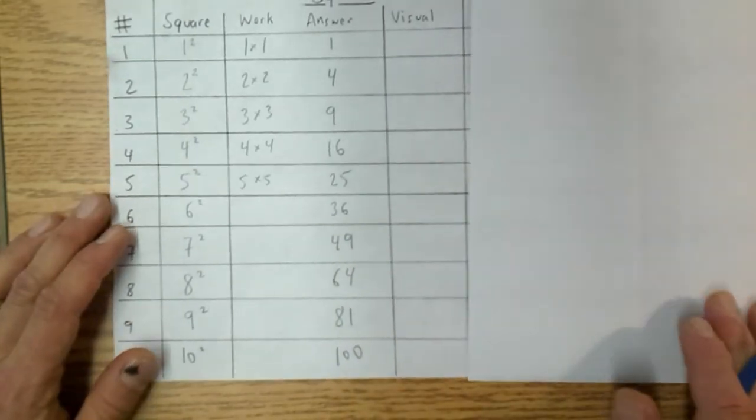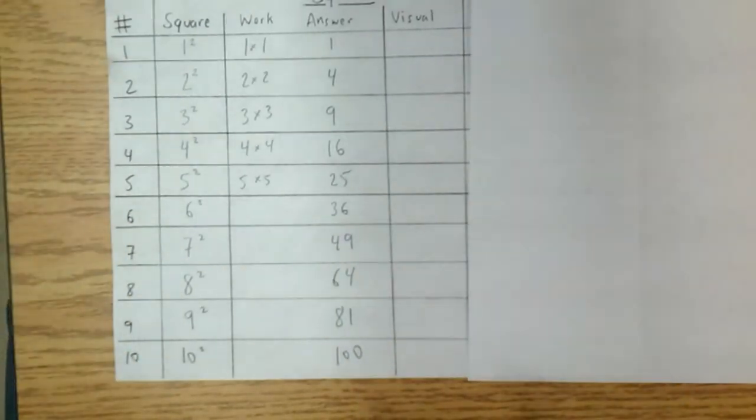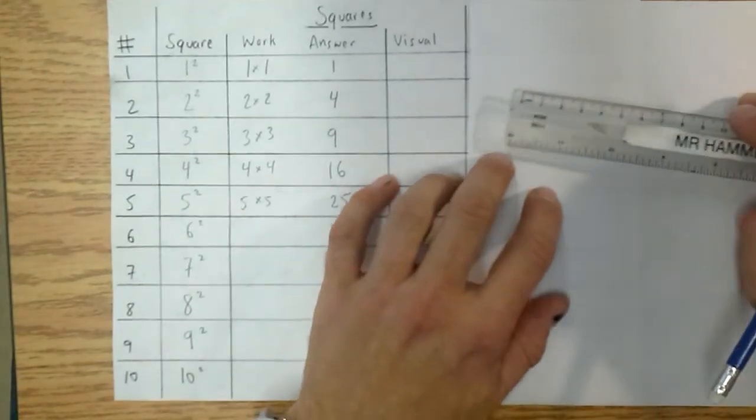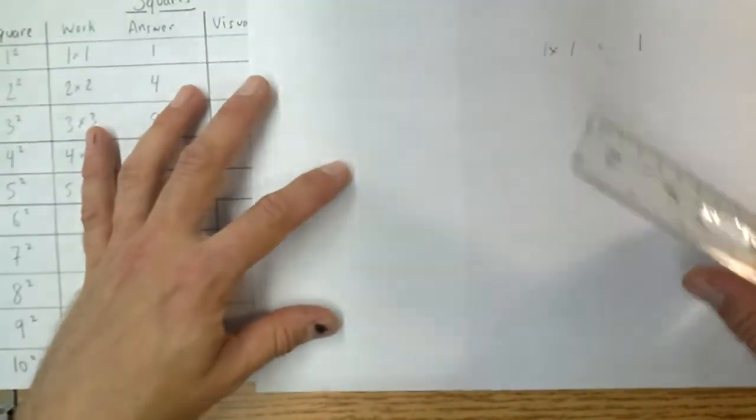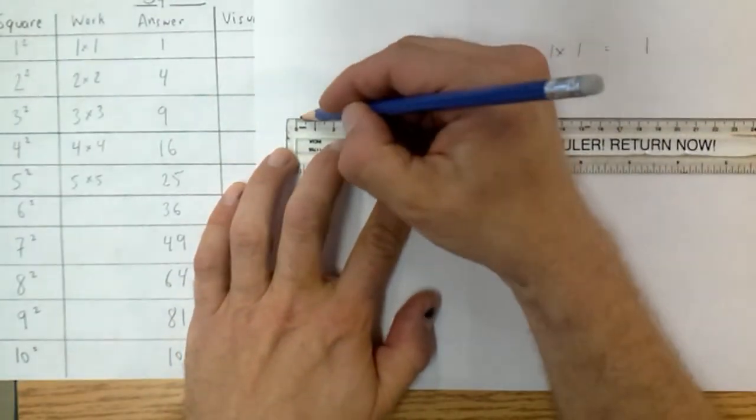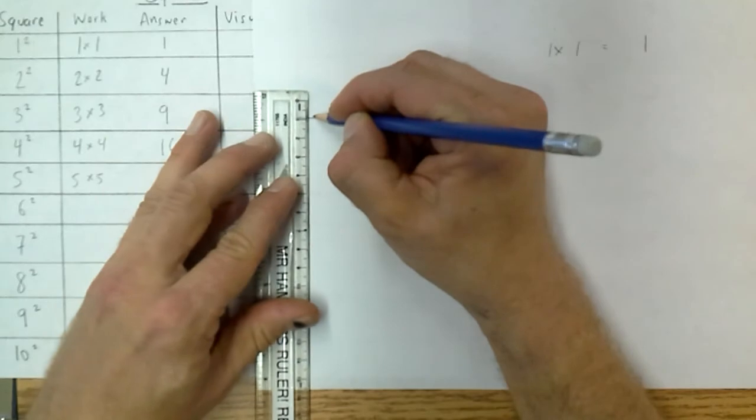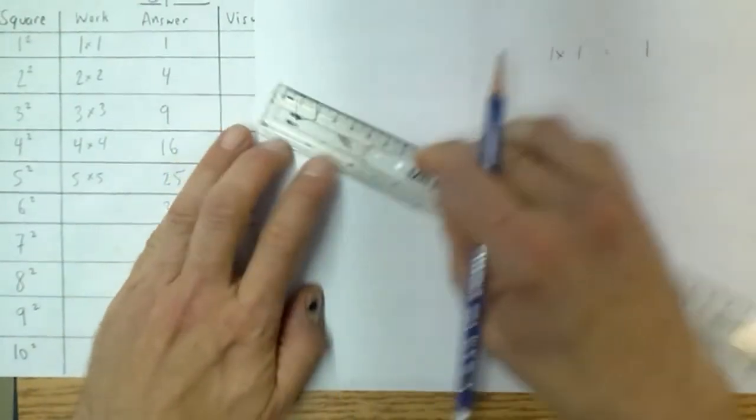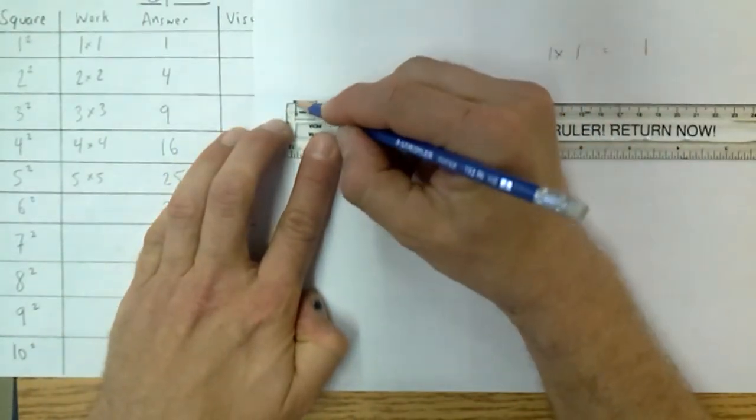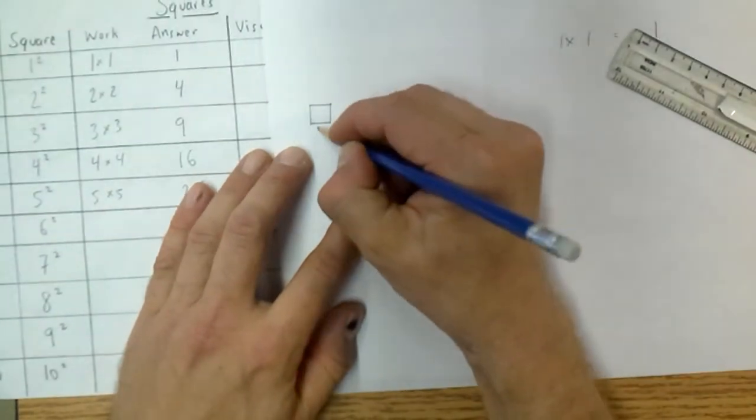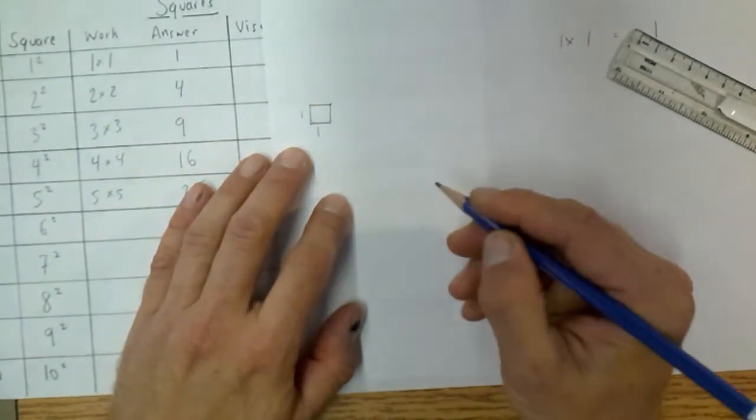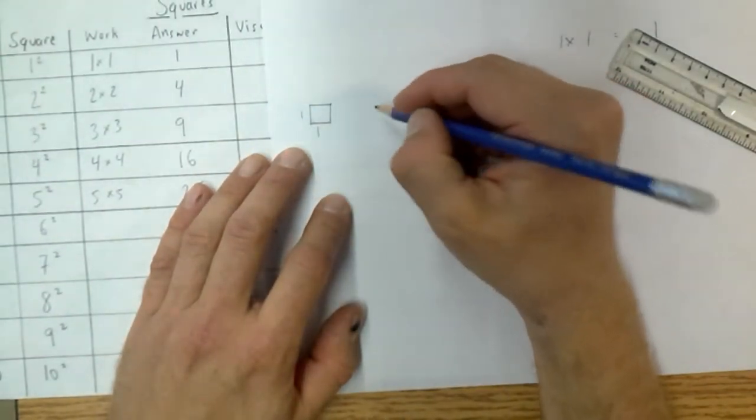Now how do we look at that visually and what does that mean that it's a square? Why are we calling it a square? Well it's actually based upon area. So if we think about area and if we had a 1 by 1 cm square here. There we go. I have a 1 cm by 1 cm square.